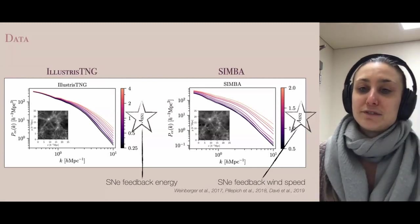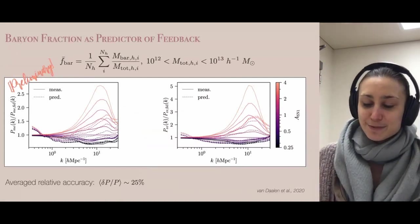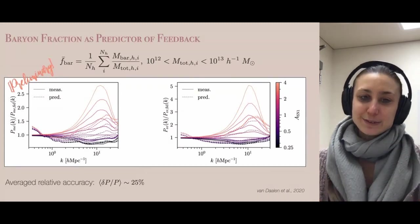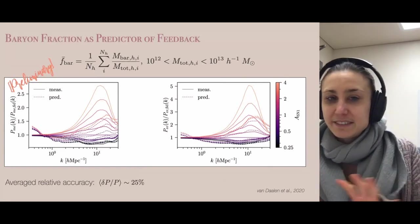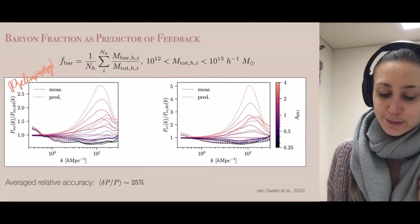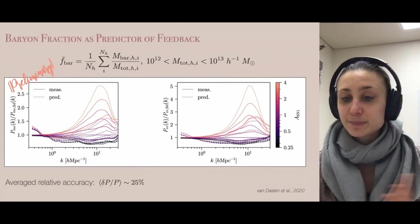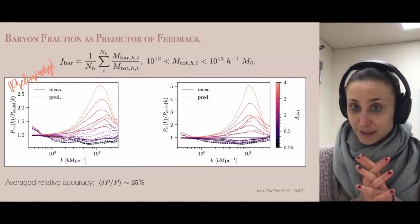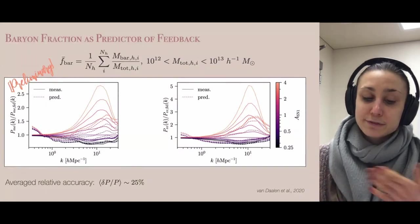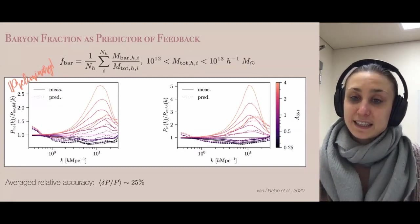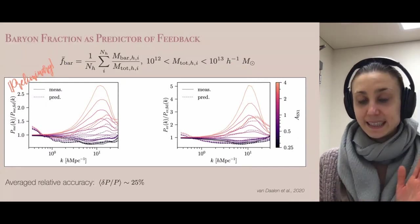This brings me to the first challenge we faced: because these models are so different, we needed to identify parameters that are observable and allow us to quantify baryonic effects independent of the given simulation implementation. One quantity that appears very promising for that is the baryon fraction in halos, as found in particular in the analysis by van Daalen 2020. The first step in our analysis was to check whether this holds for CAMELS and whether we can use the baryon fraction to predict baryonic effects on the electron density power spectrum.